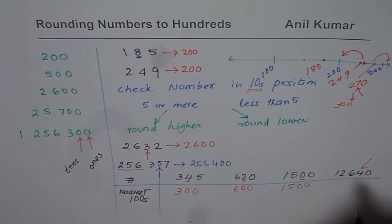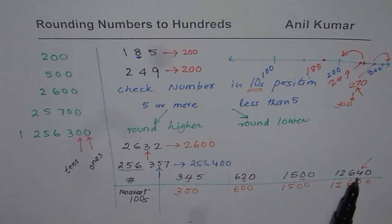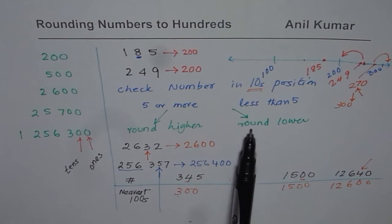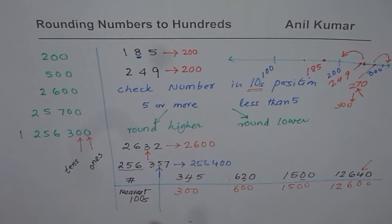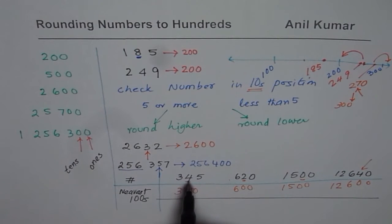Most of the time the number changes. But in some cases, if already tens and ones position is zero, it remains same. In this particular case, 4 is lower than 5. And therefore again, this number also rounds lower to 12,600. So all these examples which I gave are the examples where in tens position we have a number which is less than 5. And therefore they round lower.